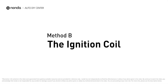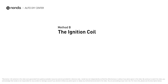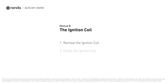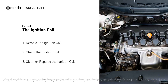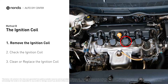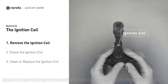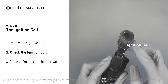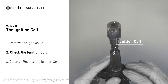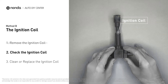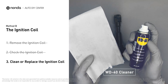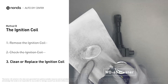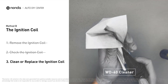Method B: the ignition coil. Ignition coils are usually installed directly at the cylinder head, above the spark plug. First, carefully remove the ignition coil from the engine. Check to see if the ignition coil is either stained or damaged. If the ignition coil is covered with engine oil or stains, simply clean it with a WD-40 cleaner.